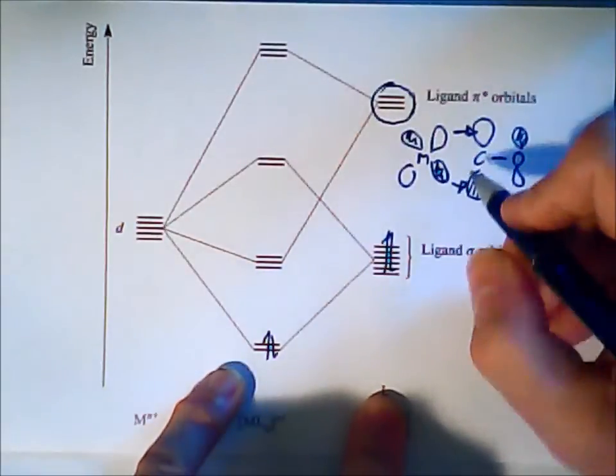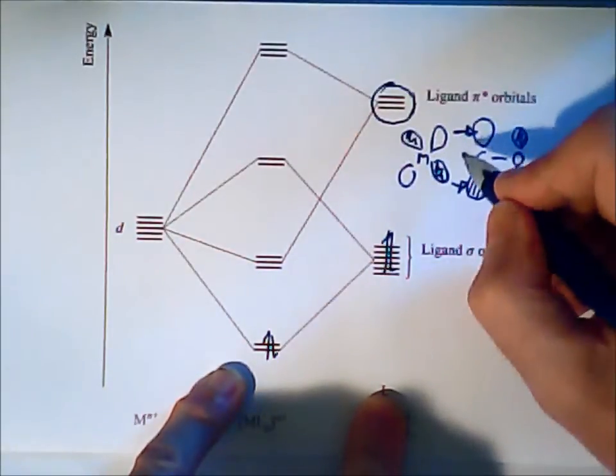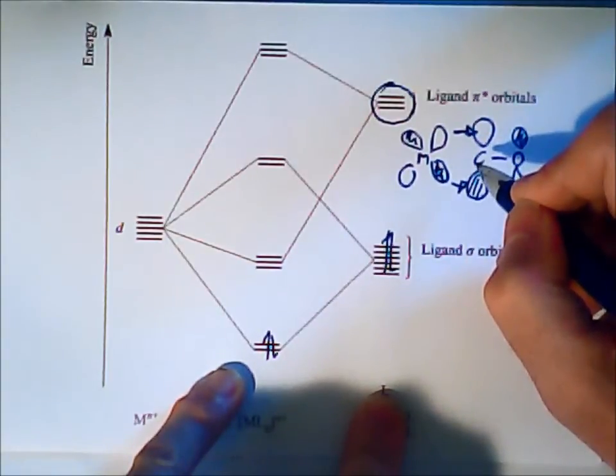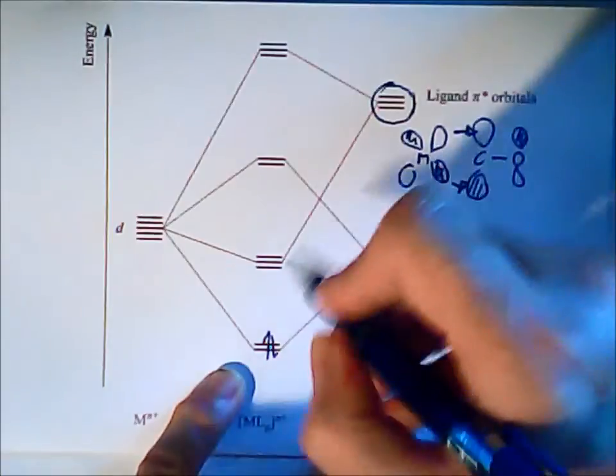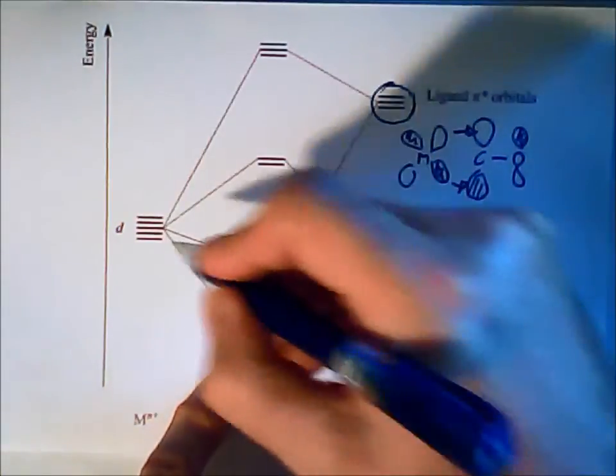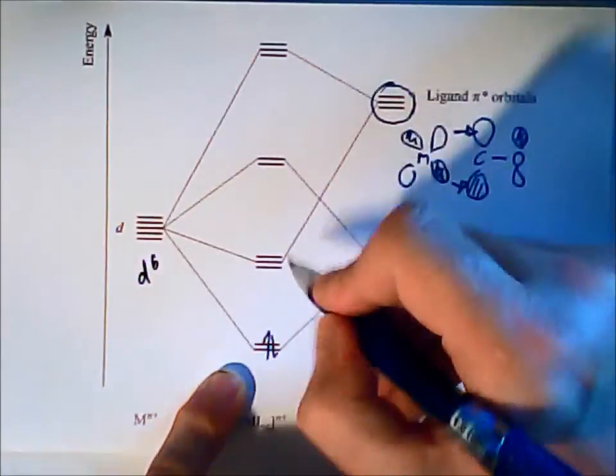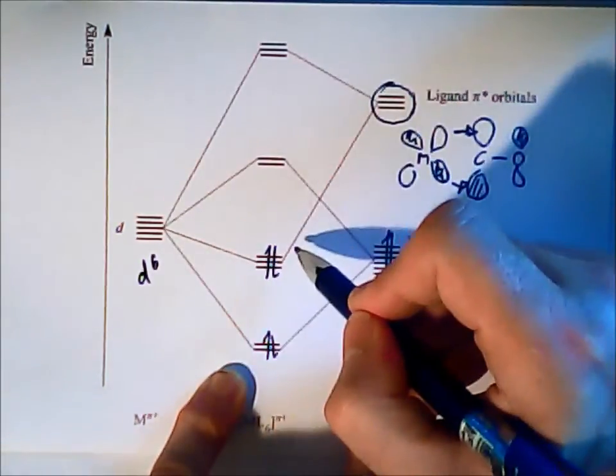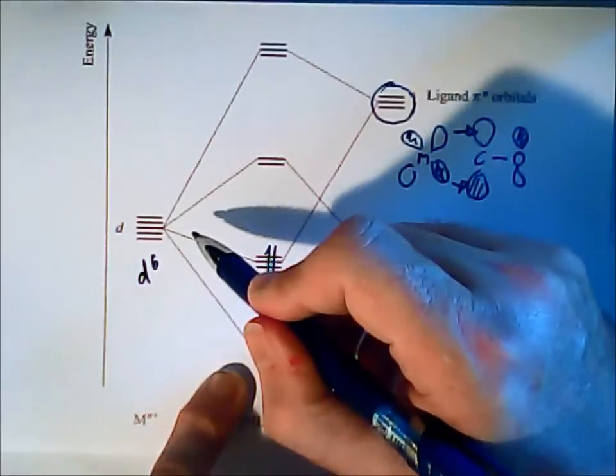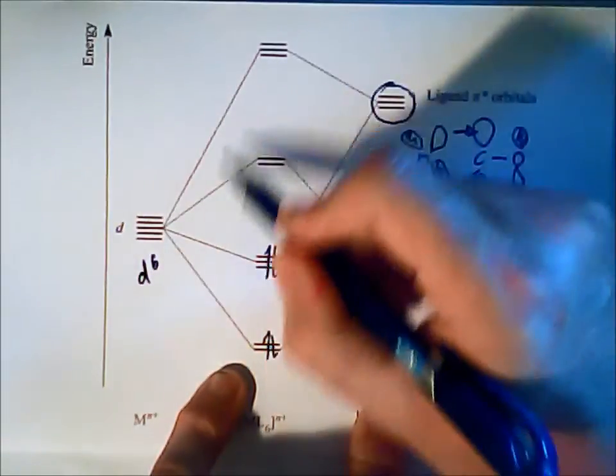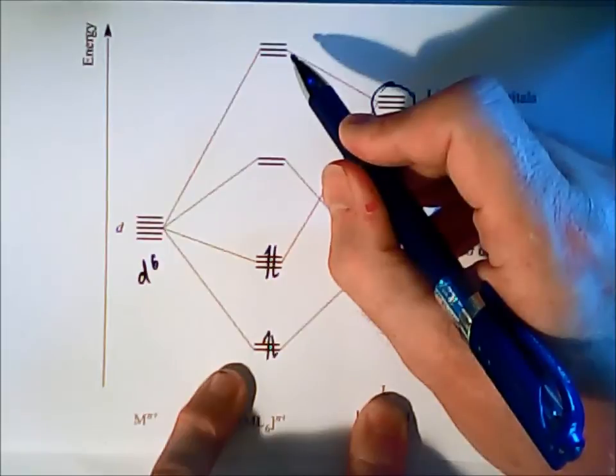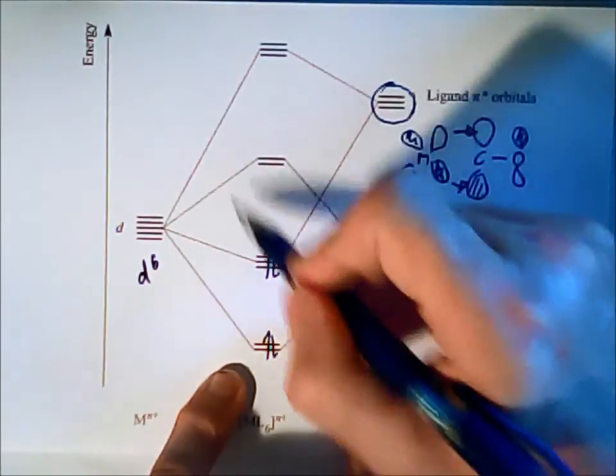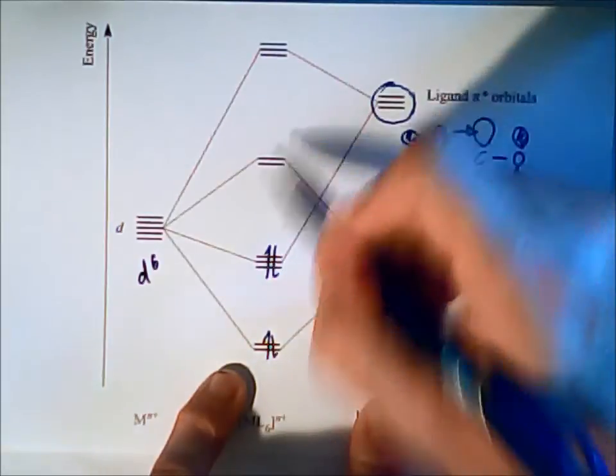Again, three cases. We have the case of xy, xz and yz. So that means, again, d⁶ example. The six electrons of the metal will go here and now this orbital is bonding. But the antibonding case is empty. And this is also antibonding. Empty depends on high spin or low spin.